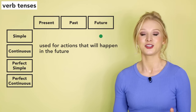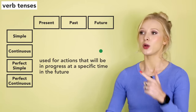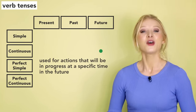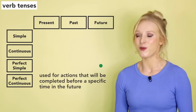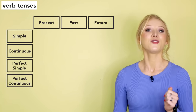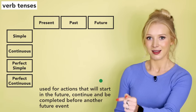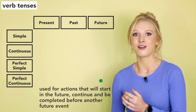We have the future simple used for actions that will happen in the future. The future continuous used for actions that will be in progress at a specific time in the future. The future perfect used for actions that will be completed before a specific time in the future. And the future perfect continuous used for actions that will start in the future, continue and be completed before another future event. Okay, that's a lot of information to remember, and I covered it very, very briefly. Don't worry, we're going to go deeper.